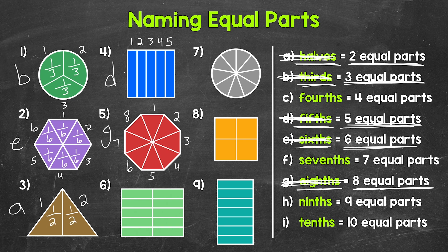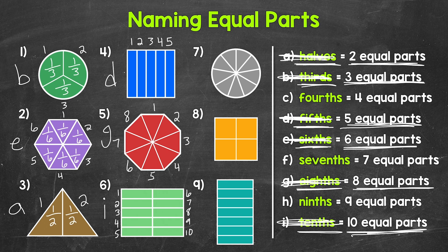Moving on to number 6, this whole has been divided into 1, 2, 3, 4, 5, 6, 7, 8, 9, 10 equal parts. We call 10 equal parts tenths. So let's put an I next to number 6 and cross off tenths. Each one of those equal parts is 1 tenth of the whole.